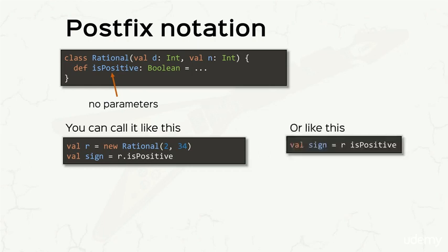Or you can just as well call it like this, where you specify the object and the method with a space, not a dot, in between them. This is called a postfix call, and it's especially useful when you want to chain multiple operators.